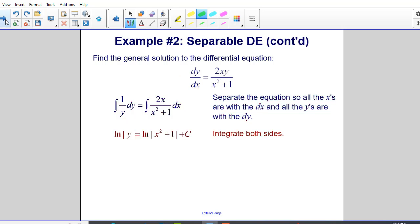Integrate both sides leaves us with the natural log of the absolute value of y is equal to the natural log of the absolute value of x squared plus one. And then I have my arbitrary constant c. I only need to add that to one side.